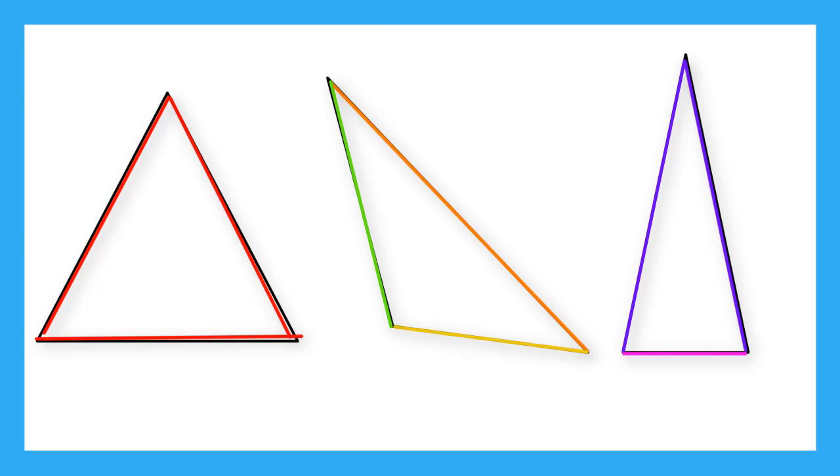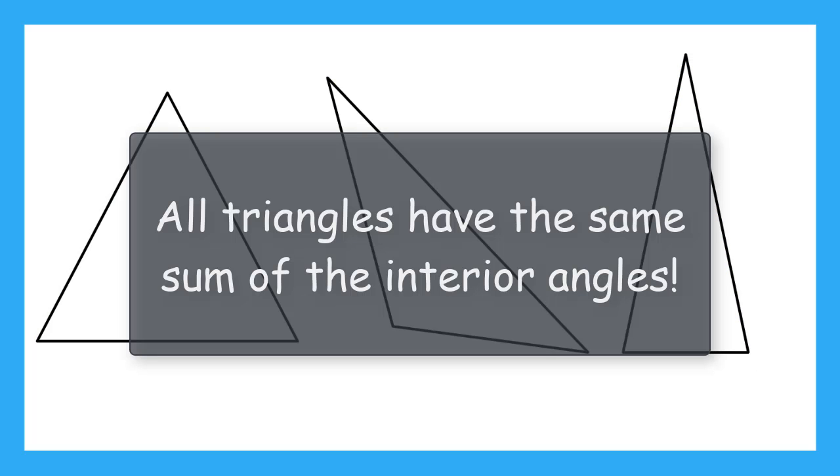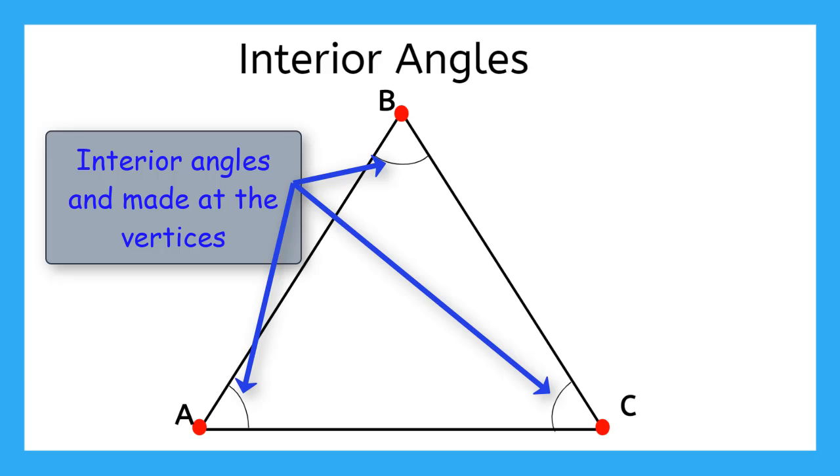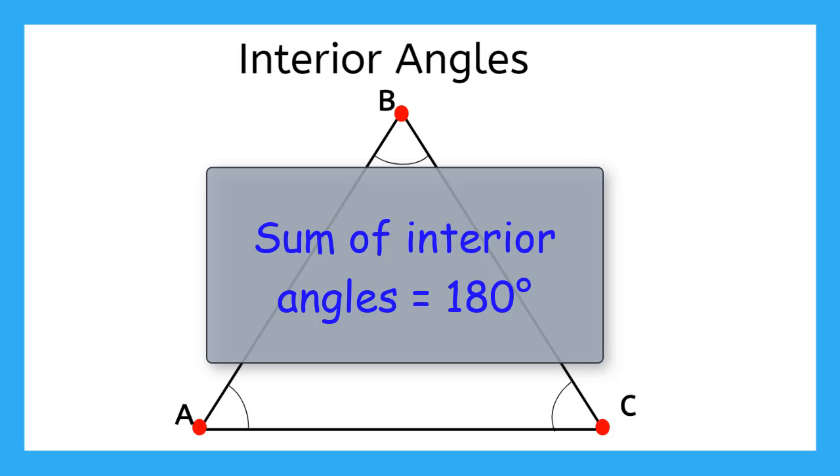But regardless of what type of triangle we're working with, one thing is always true. They have the same sum of their interior angles. Interior angles are the angles that are made at the vertices. In a triangle, when we add all of these angles together, the sum is 180 degrees.